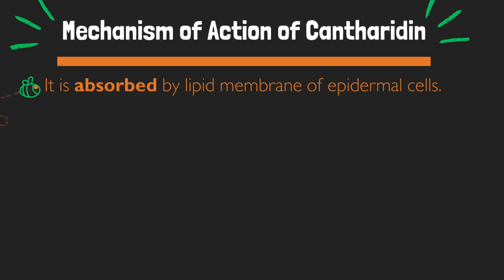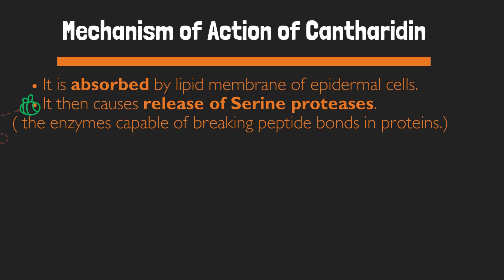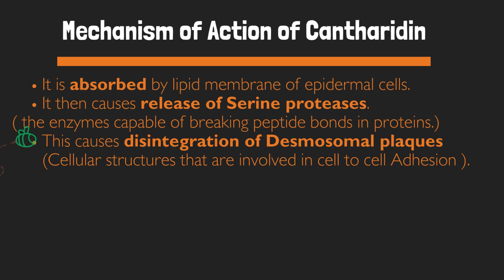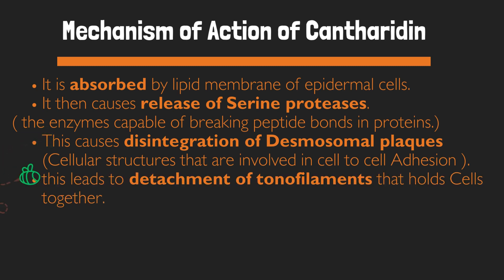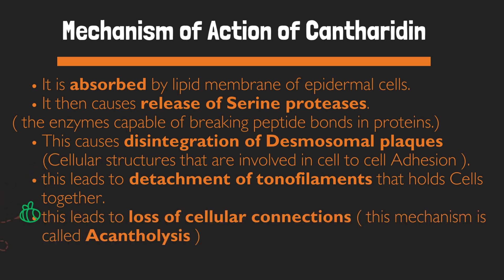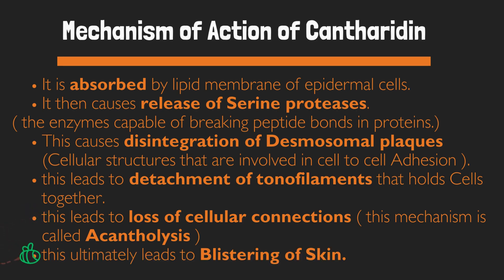Mechanism of action of cantharidin: it is absorbed by the lipid membrane of epidermal cells and causes release of serine proteases. These enzymes are capable of breaking peptide bonds in proteins, causing disintegration of desmosomal plaques — cellular structures involved in cell-to-cell adhesion. This leads to detachment of tonofilaments that hold cells together, resulting in loss of cellular connections. This mechanism is called acantholysis, which ultimately leads to blistering of the skin.